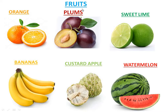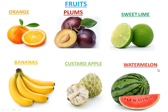These are the fruits we are going to learn in Part 2. First one is orange, then plums, sweet lime, bananas, custard apple, and watermelon. Let us learn the spellings one by one.